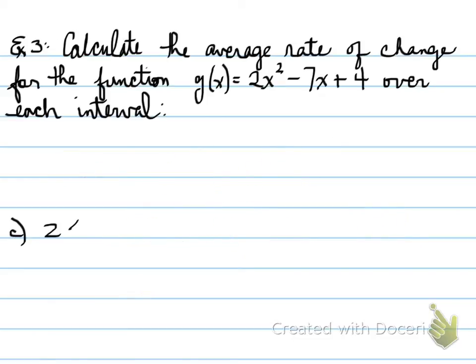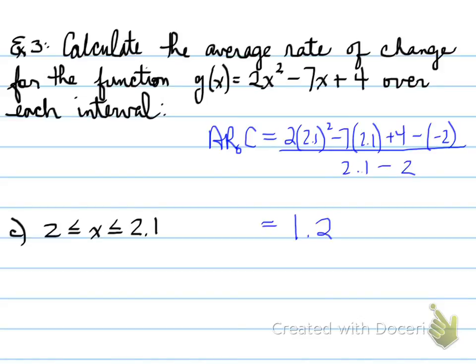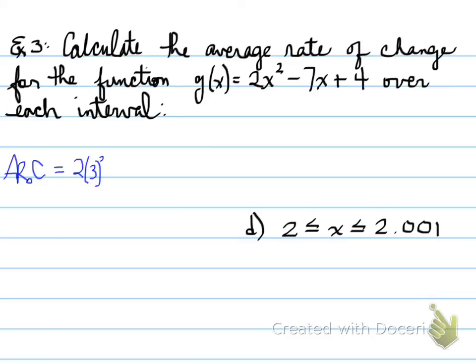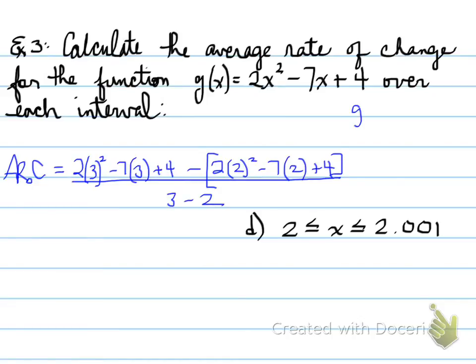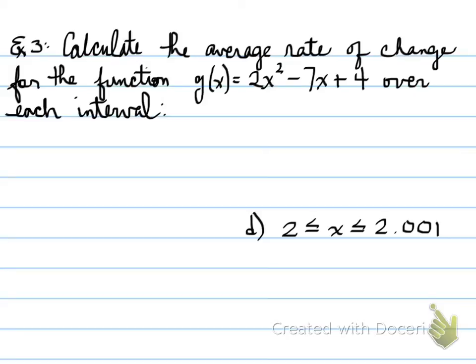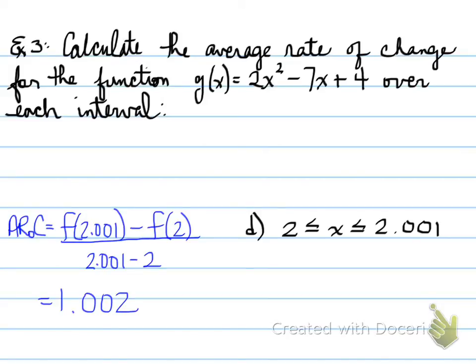Part C: between 2 and 2.1. We plug it in and find the average rate of change is 1.2 - even smaller than the last one, and the interval has decreased. Part D: between 2 and 2.001. When we plug in 2.001 and 2 using the average rate of change formula, we find the value is 1.002.